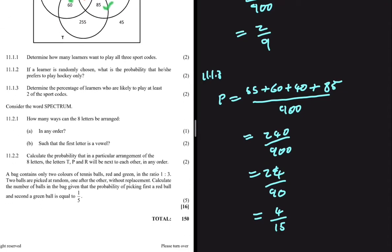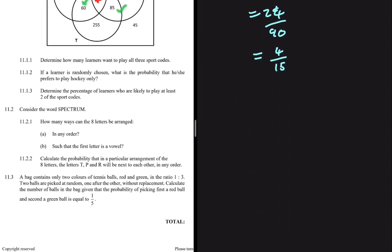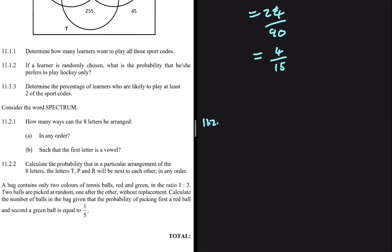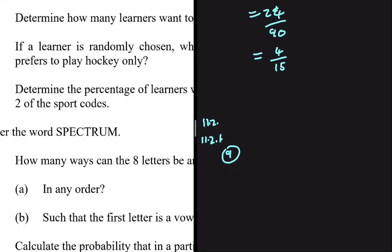Now for question 11.2: consider the word SPECTRUM. Question 11.2.1 asks how many ways can the eight letters be arranged in any order. Counting the letters: S, P, E, C, T, R, U, M — we have 8 letters. Arranging them in any order is simply 8 factorial.